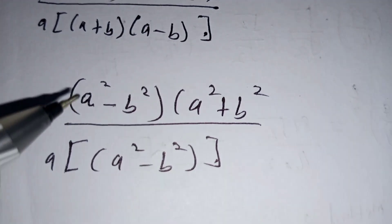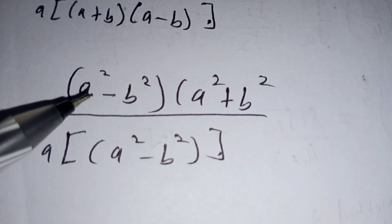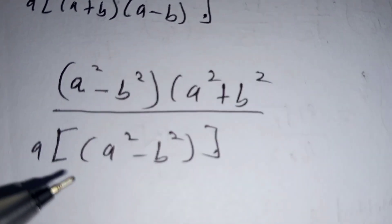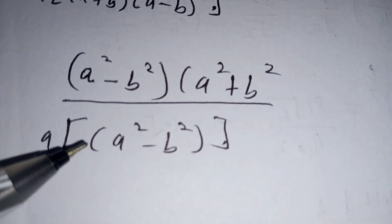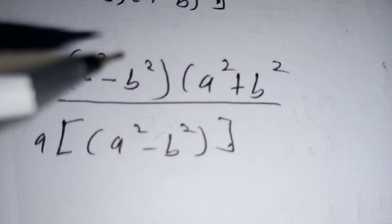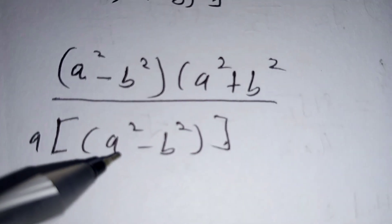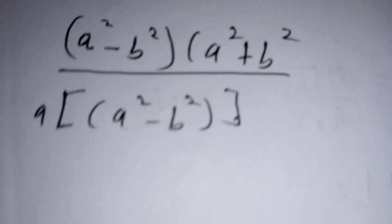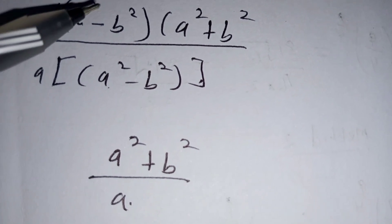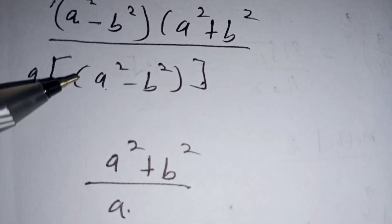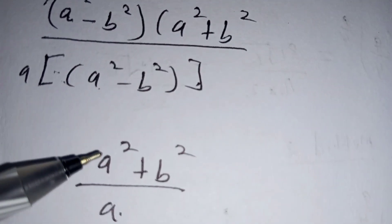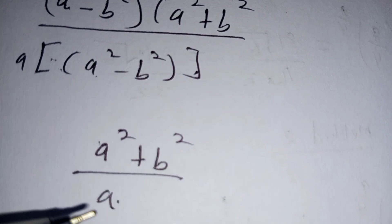When we look at the numerator, we have bracket a squared minus b squared, and on the denominator we also still have a squared minus b squared. So this part here can cancel out — we cancel bracket a squared minus b squared from the numerator with the a squared minus b squared from the denominator.